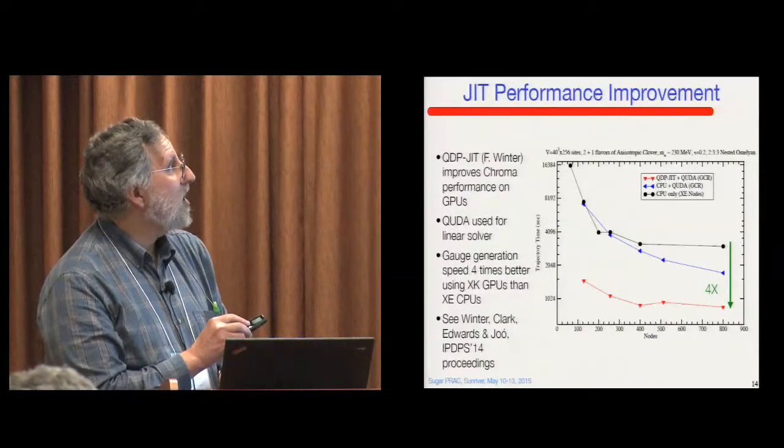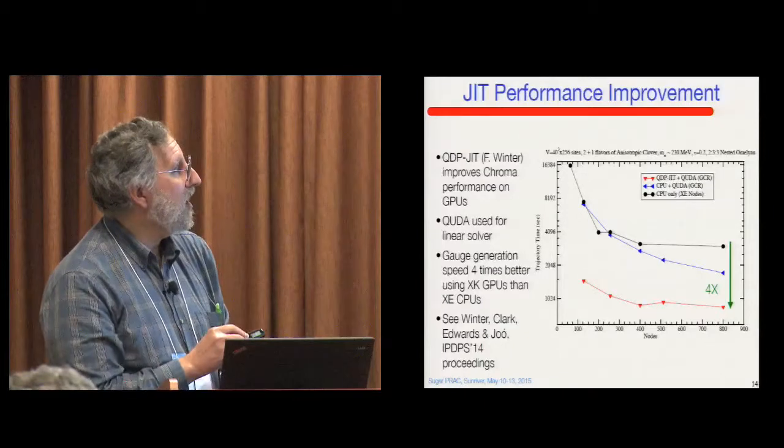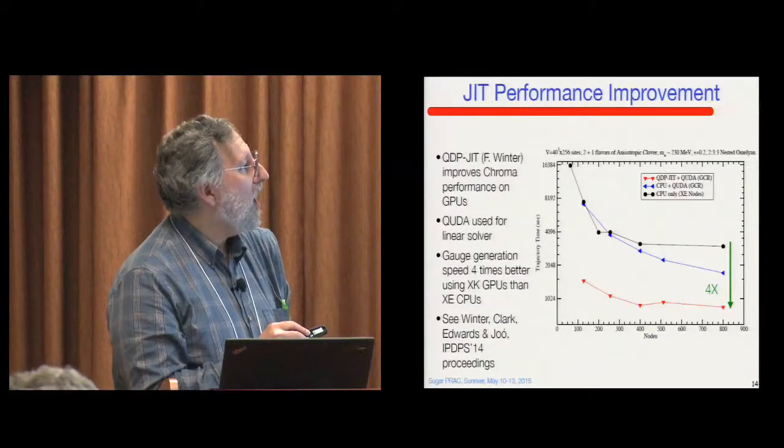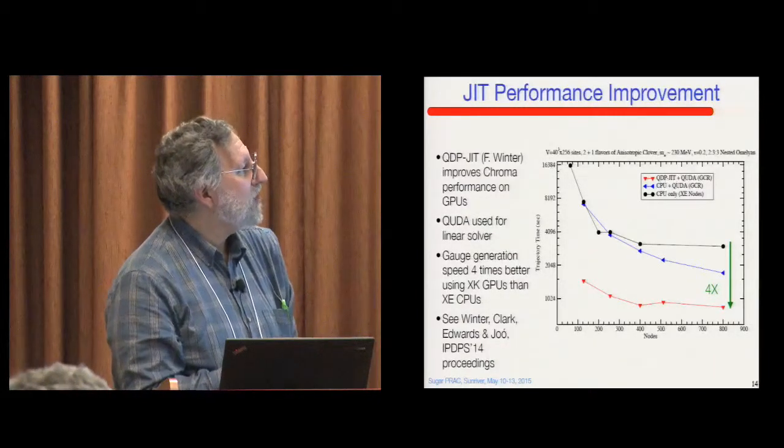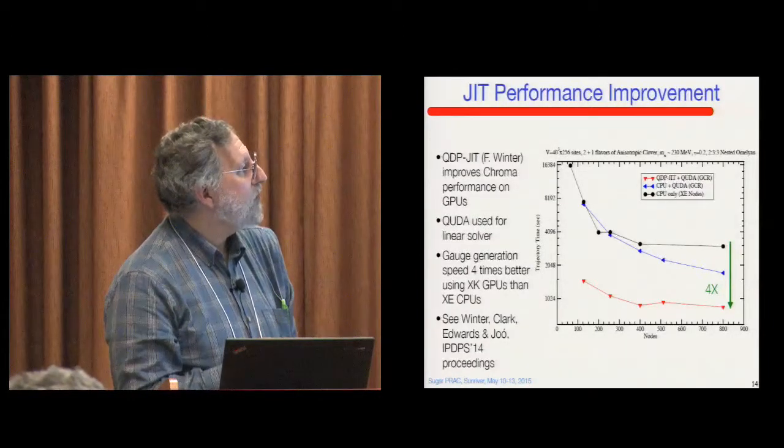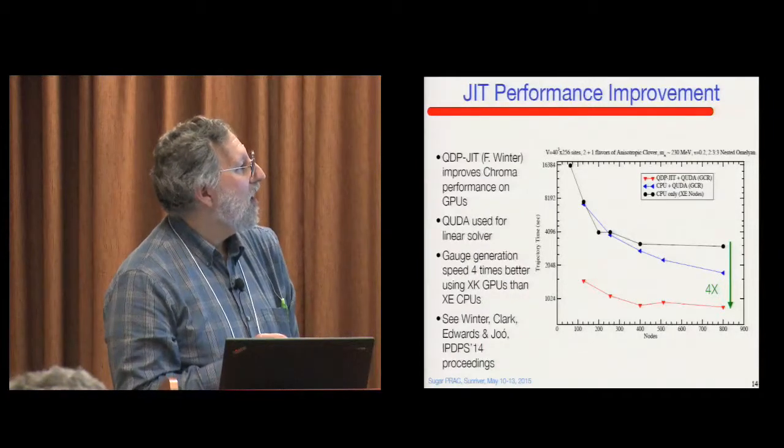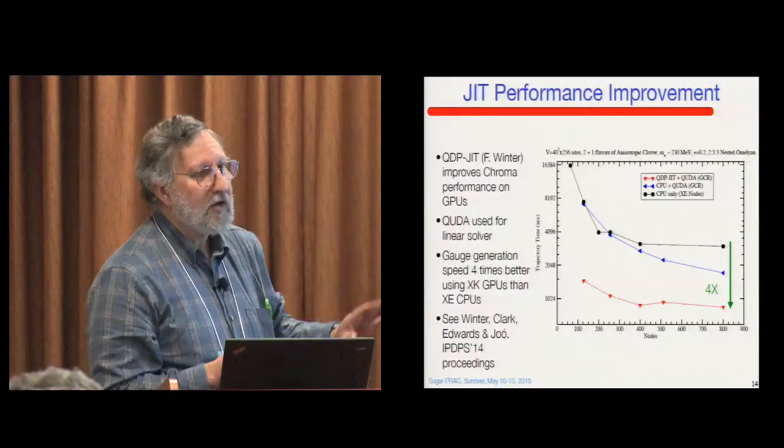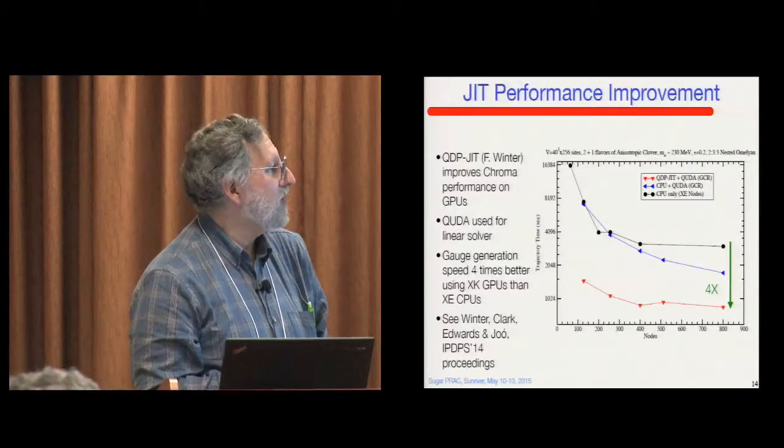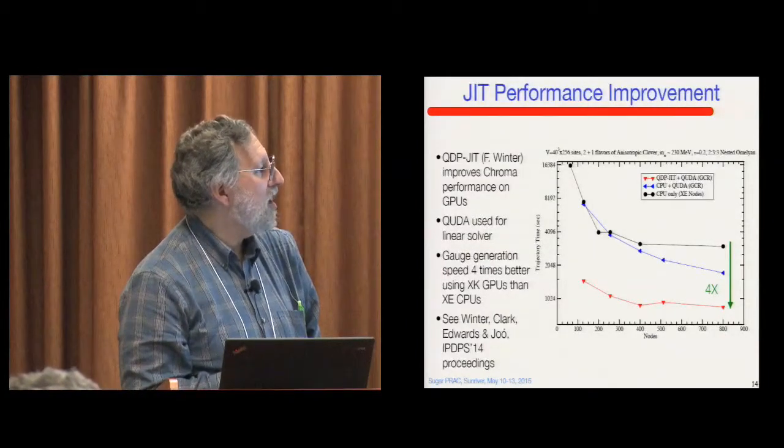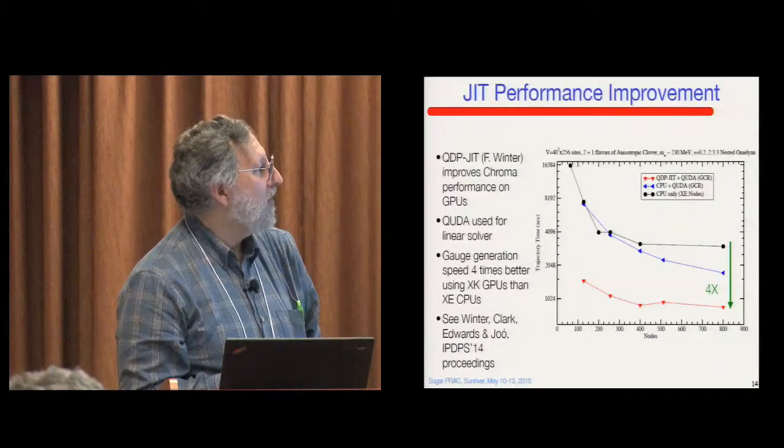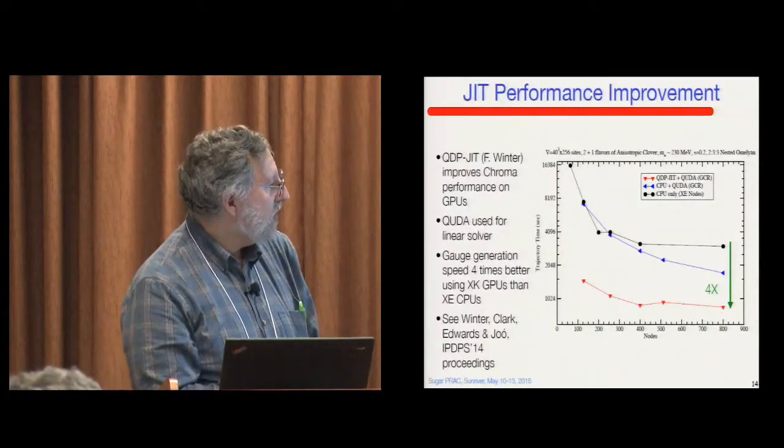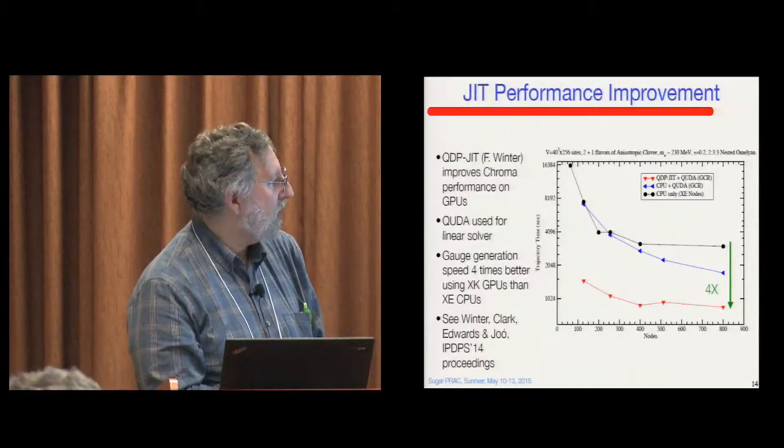This shows the just-in-time improvements in the code running on the GPUs. So again, this is in time for a particular task. So high is bad and low is good. So this is just running on CPUs. And then this blue part is adding our inverter for the code that runs on the GPUs on the library we call CUDA, Q-U-D-A. All our community codes start with Q pretty much, our libraries from this USQCD program. And then when you add the just-in-time compilation, it lets more of the code that wasn't part of the CUDA suite run on the GPU. And it's about a four-time improvement. And so if you can get a hold of IPDPS, the authors are Winter, Clark, Edwards, and Ju.